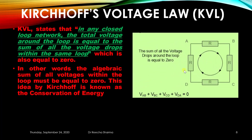This idea by Kirchhoff is known as conservation of energy. The diagram shows a closed loop circuit with resistances and a closed loop A, B, C, and D. The total voltage — the sum of all voltage drops around the loop — equals zero: VAB plus VBC plus VCD plus VDA equals zero.